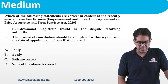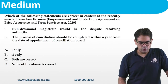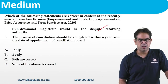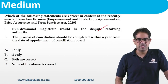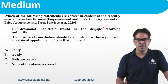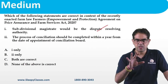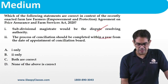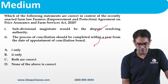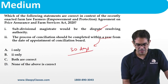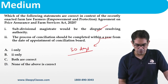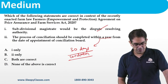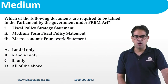Regarding farm laws and SDM: the SDM as a dispute-resolving authority was very much in the news. However, the process of conciliation does not complete in one year — so statement 2 is wrong. The answer is only option 1. This shows how questions can be confusing when close to current events.